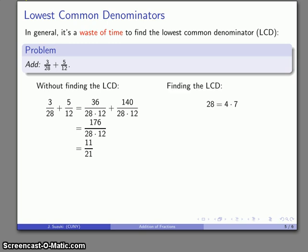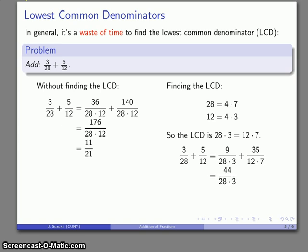On the other hand, if I find the lowest common denominator, I factor 28-12, find the LCD, 28 times 3, and then convert both fractions to their equivalent forms, get 44 over 28 times 3, and then, let's see, still have to do that factorization at the end, and so that gets me my quotient 11 over 21.